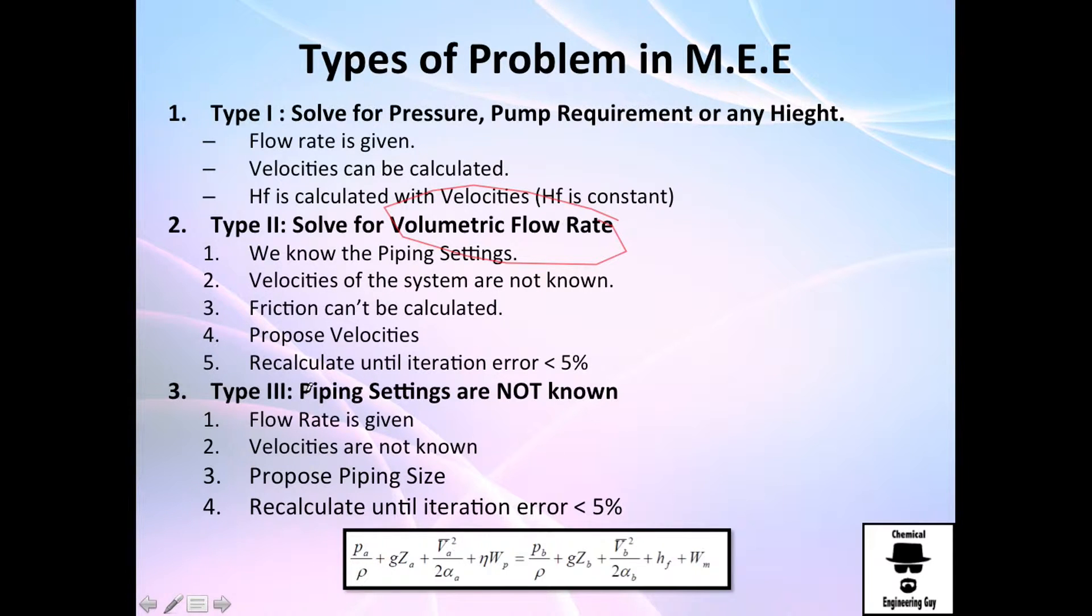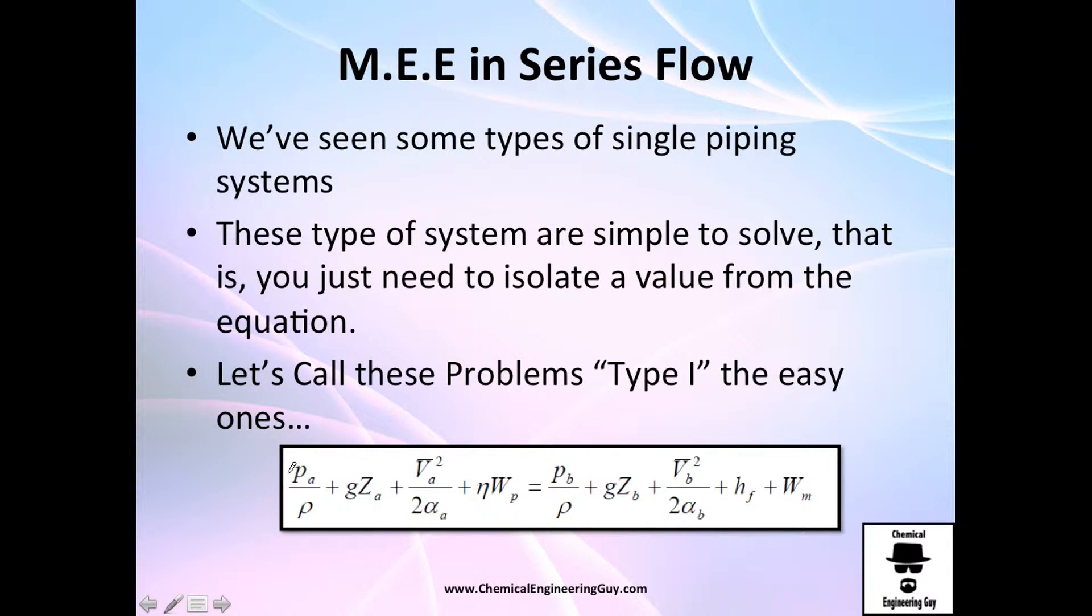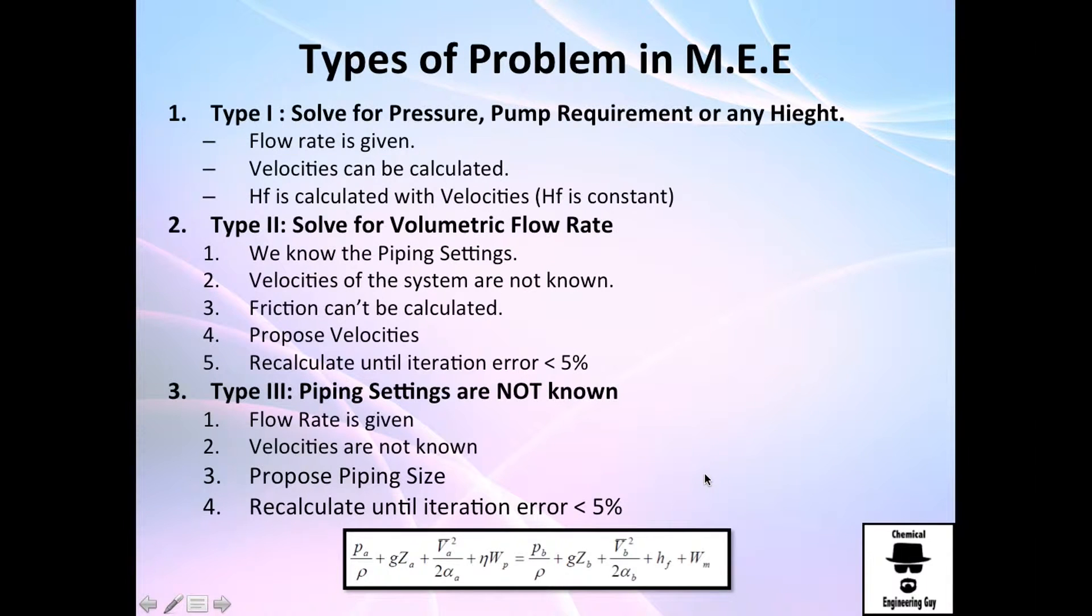So that's the first approach on the type number 2 in which you have no volumetric flow rate. Now for type number 3, let's say we have a system but we don't know the sizes of the diameters. So even though the volumetric flow rate is given, we cannot calculate the velocities because we don't know the size. So how can we solve that? That's pretty similar to this if we don't have velocity, we don't have velocity heads and we cannot calculate the loss of friction.